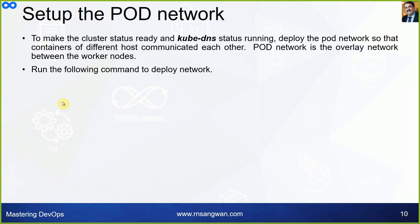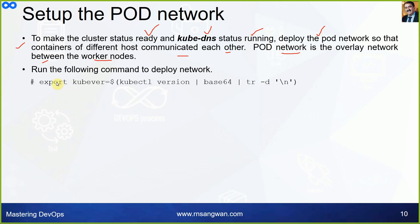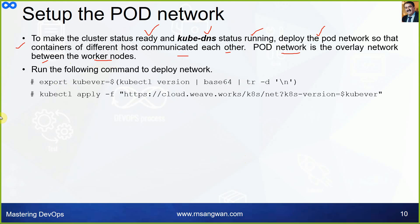Set up the pod network to make the cluster status Ready and the kubelet DNS status Running. Deploy the pod network so that containers on different hosts can communicate with each other using an overlay network between worker nodes. There are many CNI network plugins available — we have a dedicated session on Kubernetes networking where we will discuss different plugins, their features, and use cases. In the lab assignment we used Flannel; in the presentation I am talking about Weave.